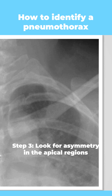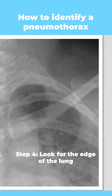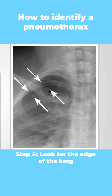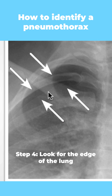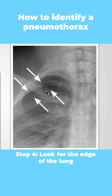The next step is to look for the edge of the lung. Here we can clearly identify a thin line which represents the visceral pleura. On this side of this line, there is increased blackness from the pneumothorax, confirming that this is a pneumothorax.